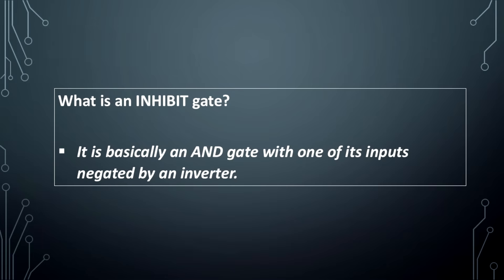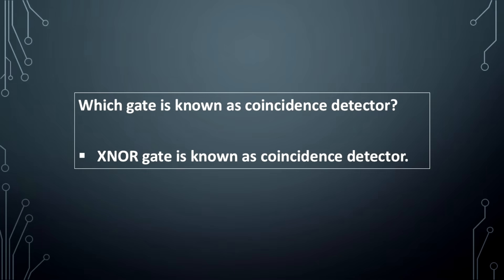What is an inhibit gate? It is basically an AND gate with one of its inputs negated by an inverter. Which gate is known as coincidence detector? XNOR gate is known as coincidence detector.